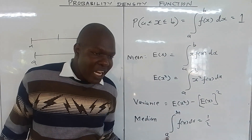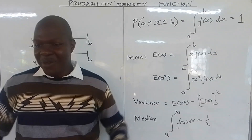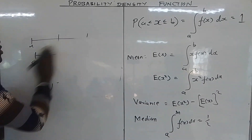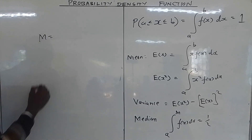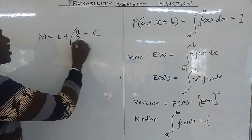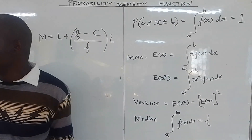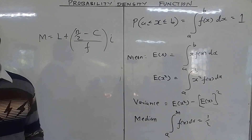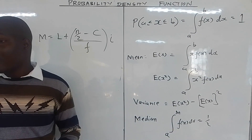So the median means you integrate from the lower class limit to the median value to give you half of the value. If you reach all the way to the upper limit you get the full probability measure. That is the median. The formula of the median in the discrete random variable is defined by the lower class limit of the median class plus the median minus the cumulative frequency of the class above the median class over the frequency of the median class times the class interval.